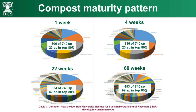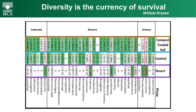David Johnson is now a molecular microbiologist doing fascinating work with DNA. This is just an indication of the maturity pattern of a compost — the Johnson-Su compost takes well over a year to mature. It started with 306 species out of a total of around 700 species of organisms, but only 23 were in the top 80%. At four weeks, still only 23 species. By 22 weeks, 57 species in the top 80%. At 60 weeks, 99 species in the top 80%. That biodiversity is what we want in a good compost — as it matures, that biodiversity increases.